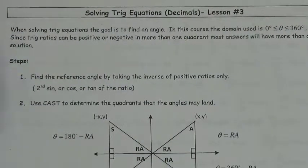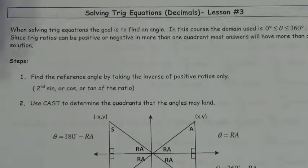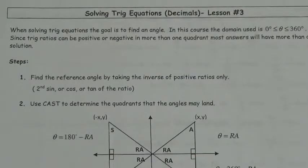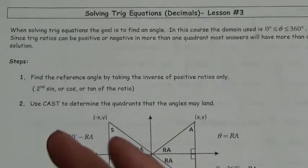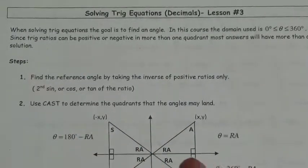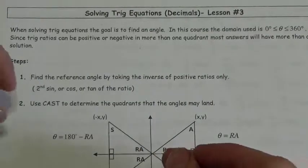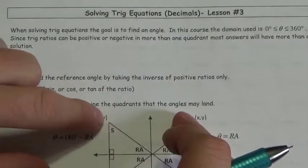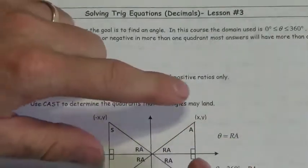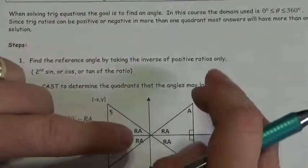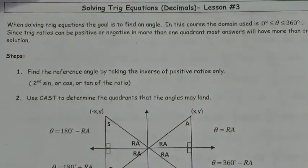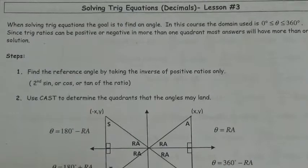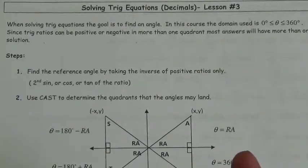In solving a trig equation, you will be given the ratio, and you have to go back to the angle that produced that ratio. But you should already be anticipating that sine gives positive ratios in two quadrants, cosine gives positive ratios in two quadrants, tangent gives positive ratios in two quadrants. And therefore, the negatives are also all going to show up in two quadrants as well. So there's going to be some repetition here.